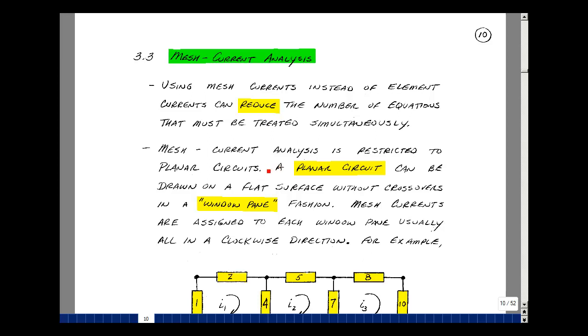Now, mesh current analysis is restricted to what's called a planar circuit. This is a circuit that can be drawn on a flat surface where no wires cross over. They tend to look like window panes. We're going to assign in each of these little window panes a clockwise direction current, and then knowing those currents we'll be able to find any other current and voltage in the circuit.